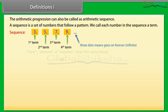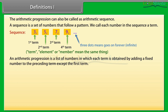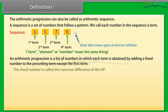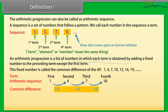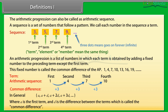An arithmetic progression is a list of numbers in which each term is obtained by adding a fixed number to the preceding term, except the first term. This fixed number is called the common difference of the AP. In general we can write an arithmetic sequence as: a, a+d, a+2d, a+3d, and so on, where 'a' is the first term and 'd' is the common difference.